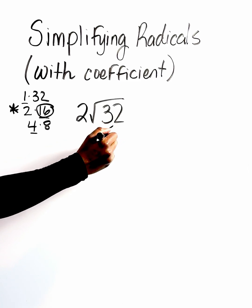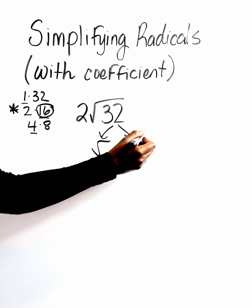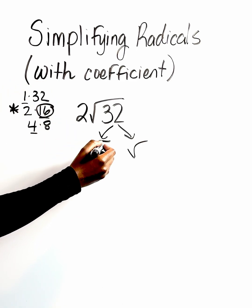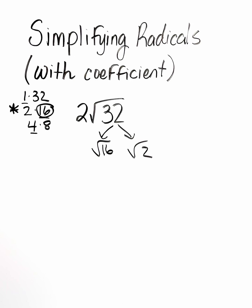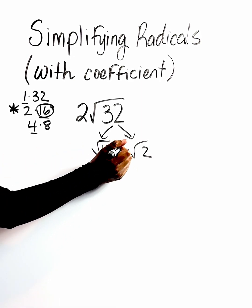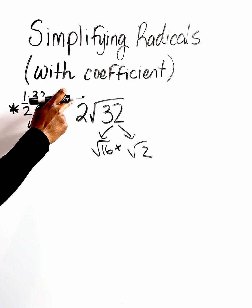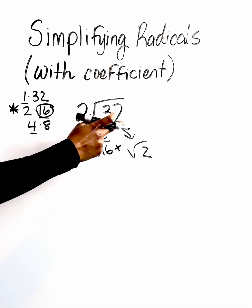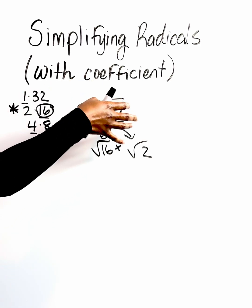So we know when we're writing our radicals, we always put the perfect square first. We're going to say root 16 and root 2, and then we're going to rewrite using multiplication. So we're going to multiply these two together. Now, don't forget about this two that's right here chilling in the front. Anytime you see a number attached to something and there's nothing in between them, that means that they're multiplied together.